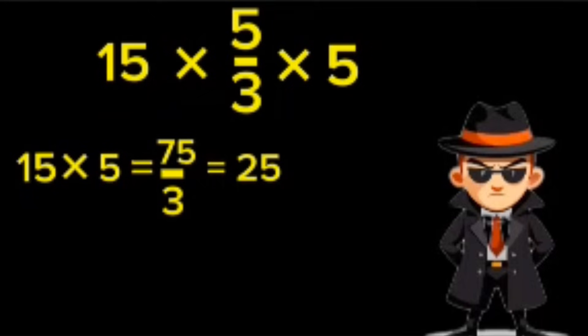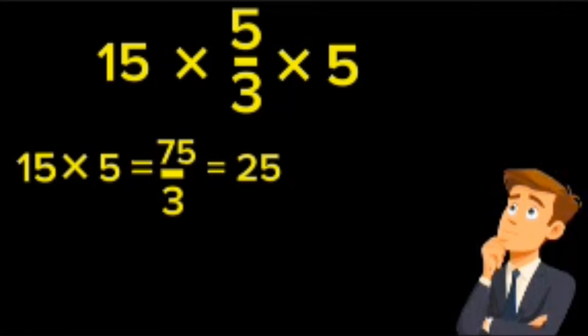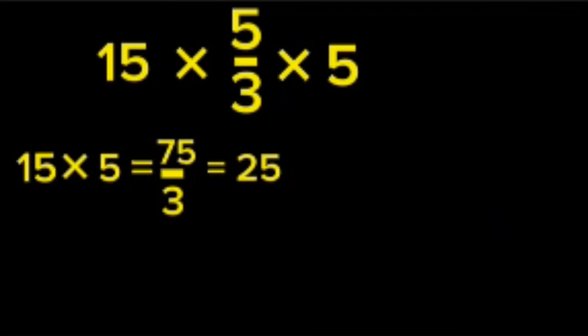Now, pause, because we're not done yet. There's still one operation left. Next step, multiply by 5. 25 multiplied by 5 equals 125.